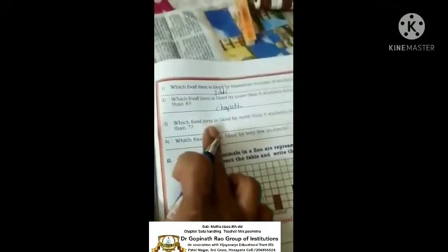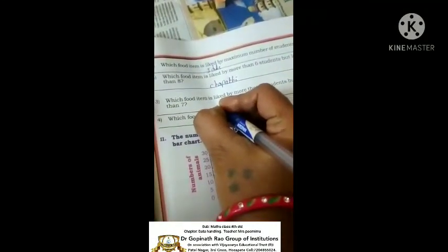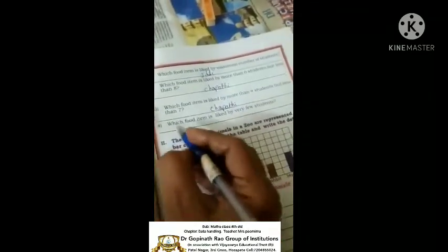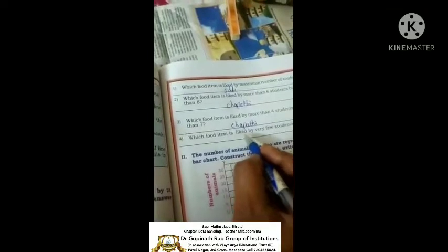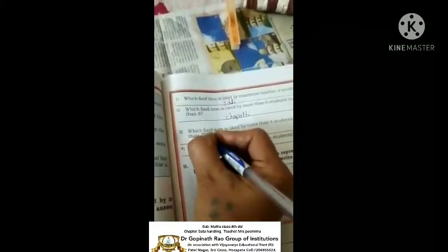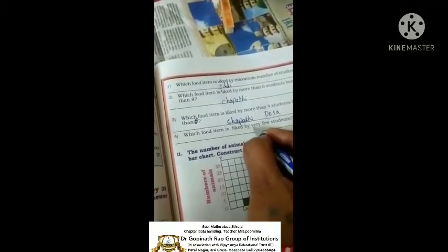Then, which food item is liked by more than 4 students but less than 7? More than 4 and less than 7. That is also chapati. You can write dosa. Which food item is liked by very few students? Puri.